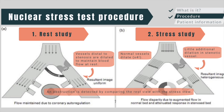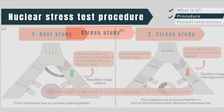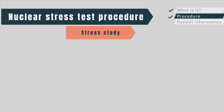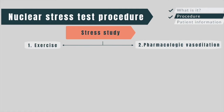An obstruction is detected by comparing the rest view with the stress view, and you will notice a region that has normal uptake during rest. Stress can be produced in two different ways: either by exercise or by pharmacologic vasodilation.